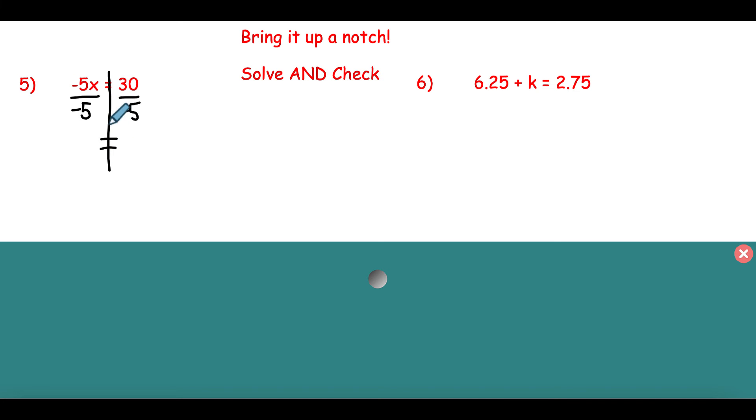Notice that when we have these equations, the equal sign never moves. It goes straight down with us. So the great thing here, negative 5 cancels with negative 5 because negative 5 divided by negative 5 is 1. So we have 1x. Now we don't typically write the 1 there. And what is 30 divided by negative 5? Well, it is negative 6. Now let's check it real quick. Negative 5 times negative 6. Does that equal 30? Negative 5, that is 30. 30 equals 30. So we did check it and it worked.